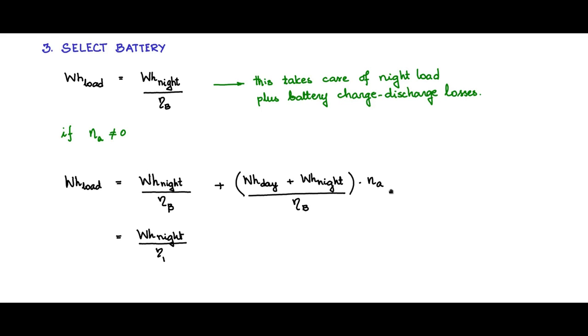So this can be simplified as watt-hour night by efficiency of the battery times (NA plus 1) plus watt-hour day by efficiency times NA.